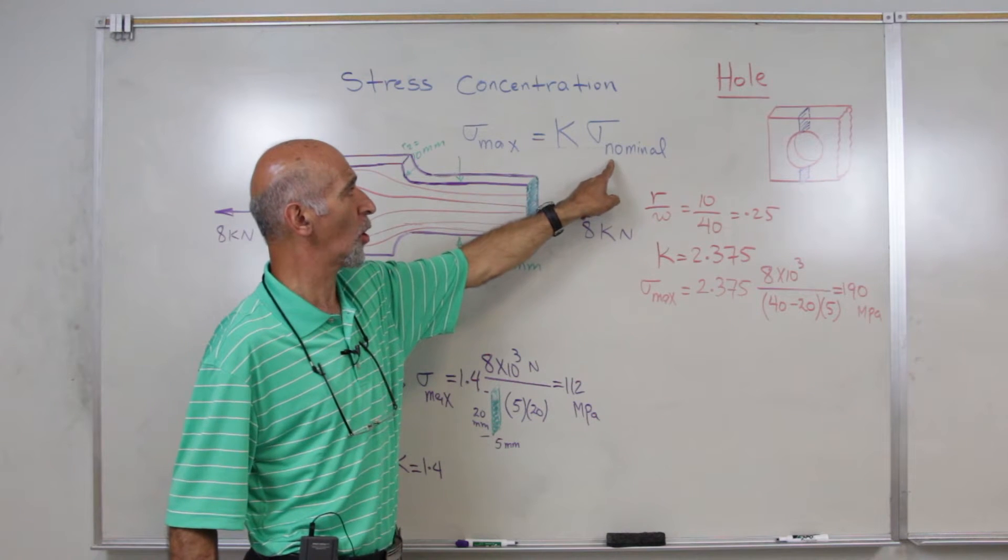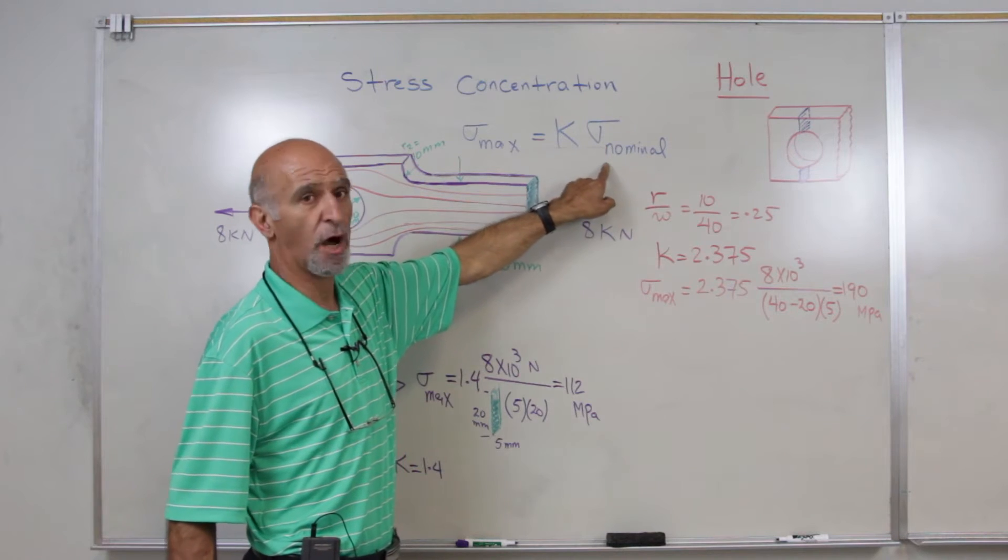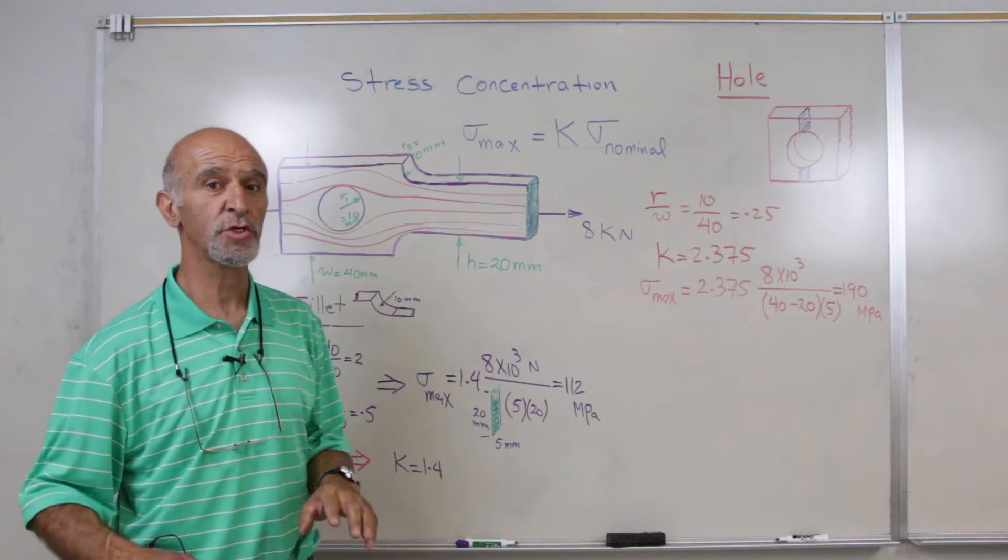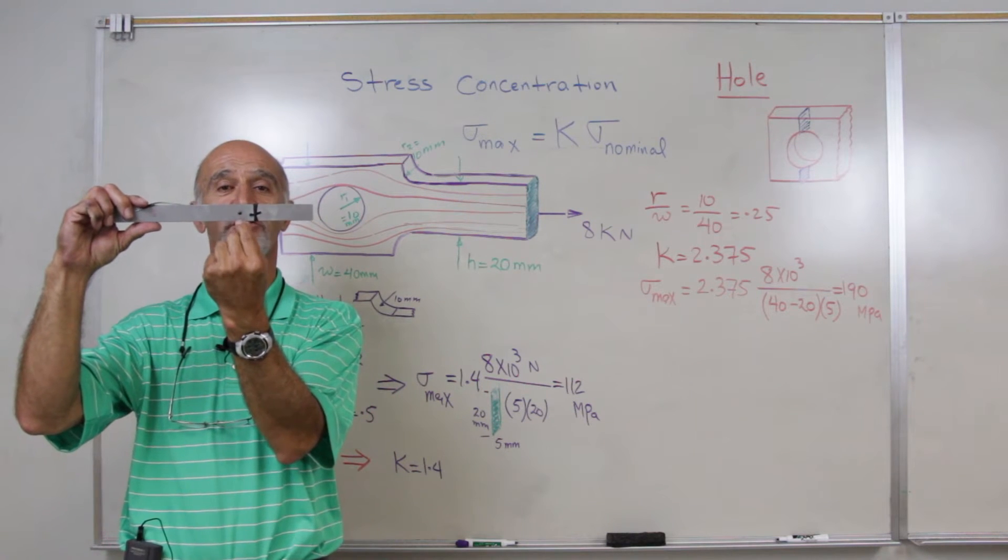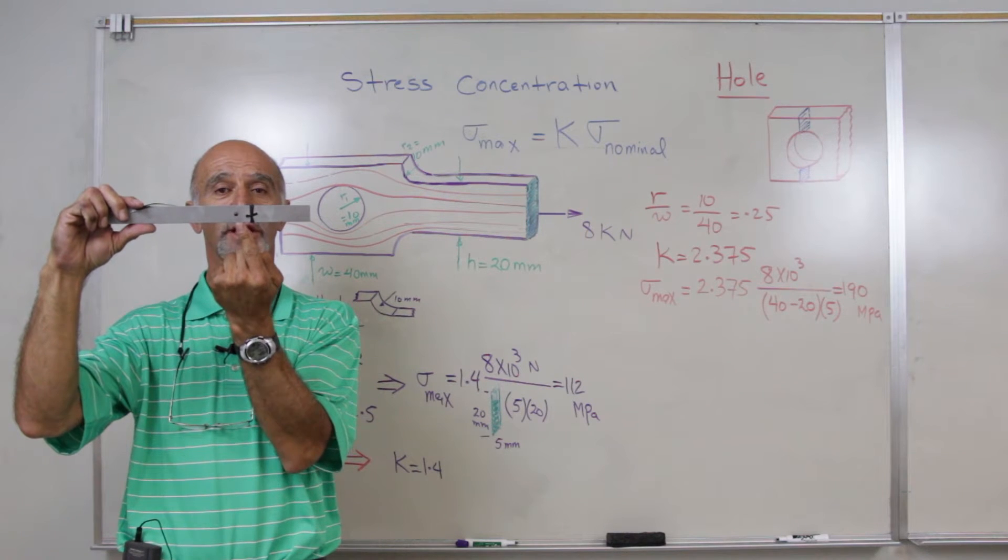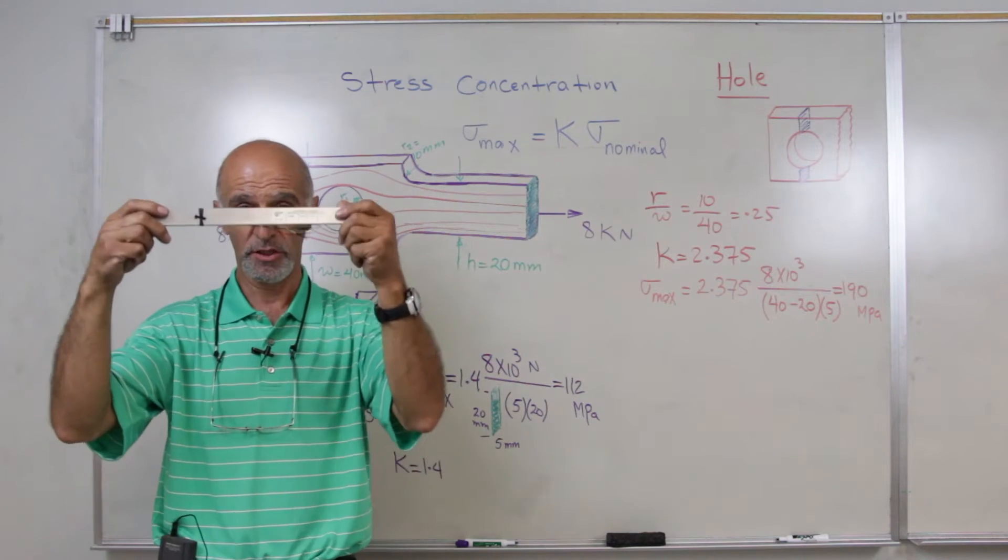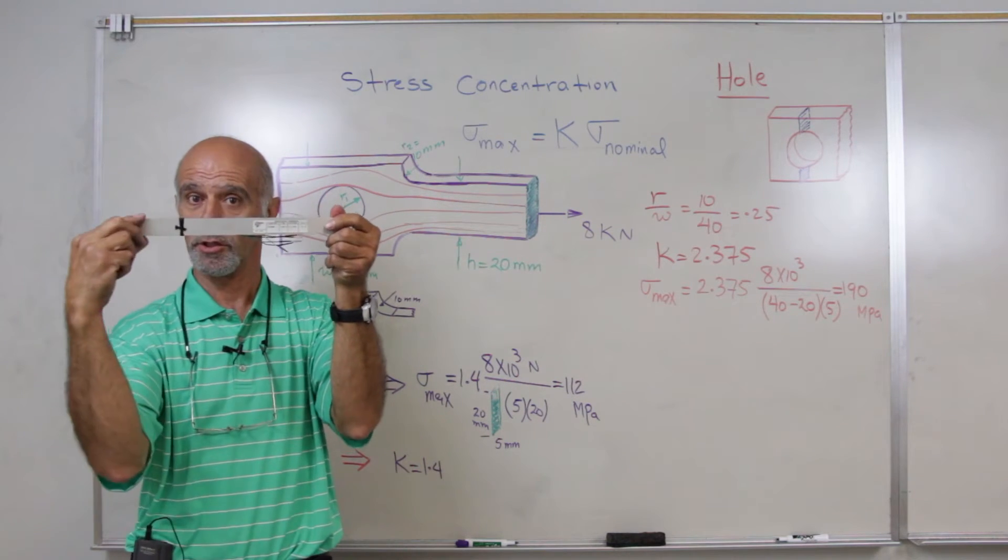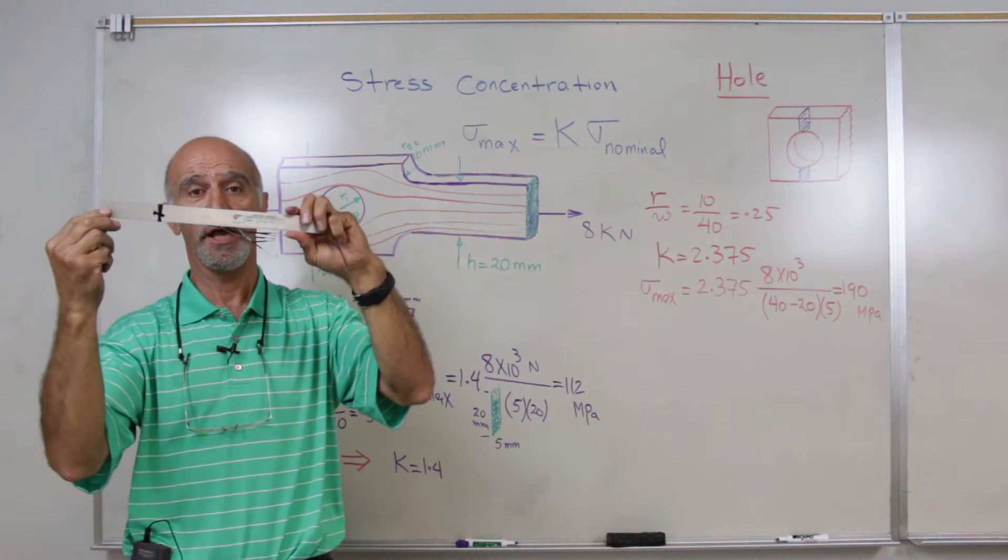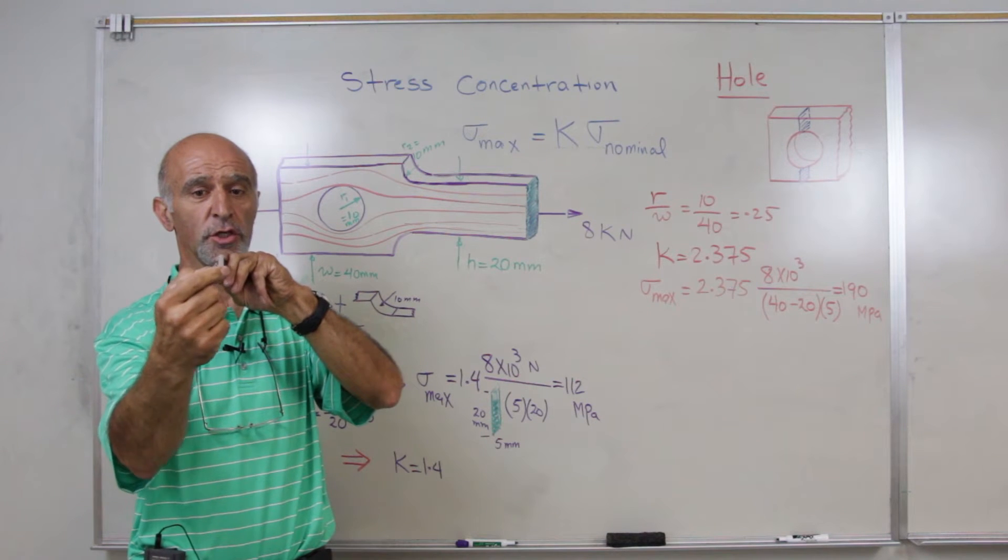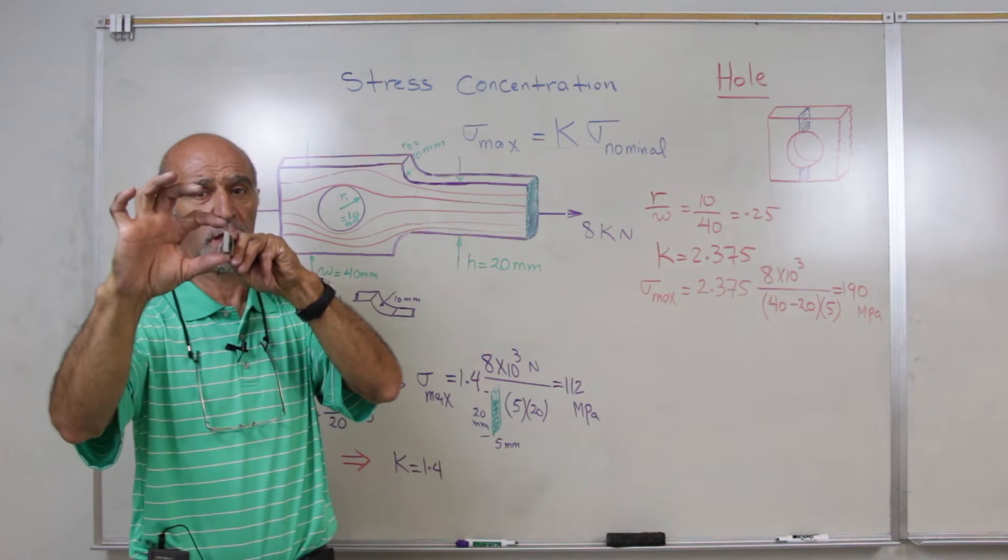And the other one is called sigma nominal, where sigma nominal is calculated from the geometric part of the body where minimum area is considered when calculating that stress. So for example, nominal stress in this bar where the geometric changes are not present, the nominal area would be the area of the cross section where it is basically B multiplied by H.